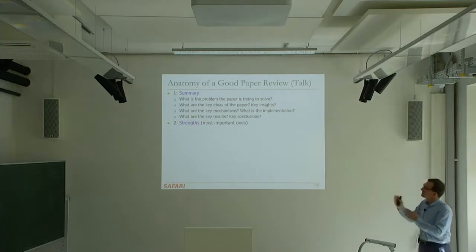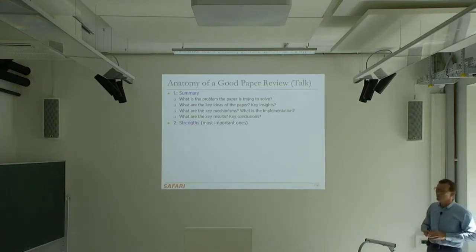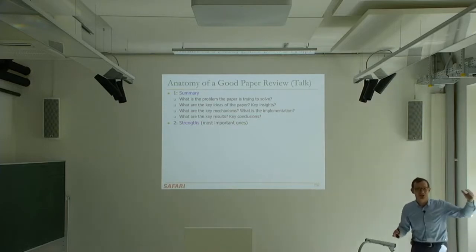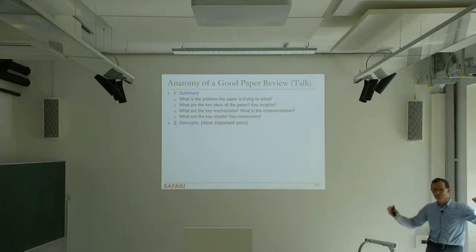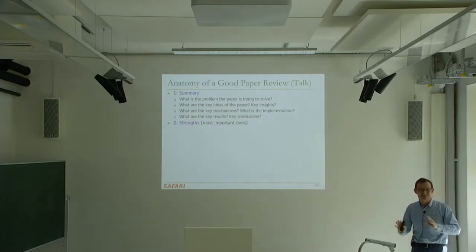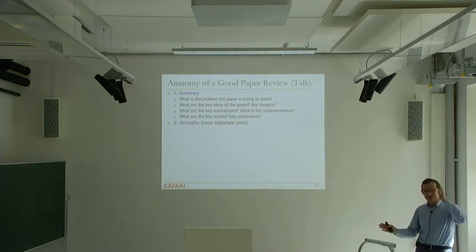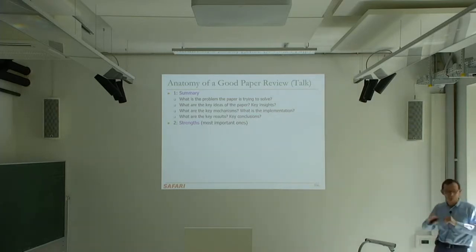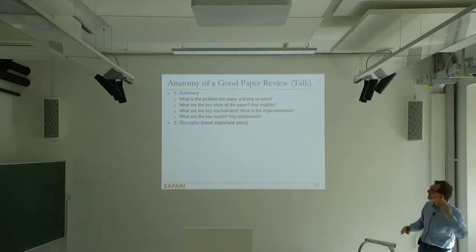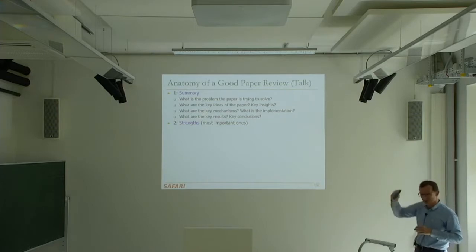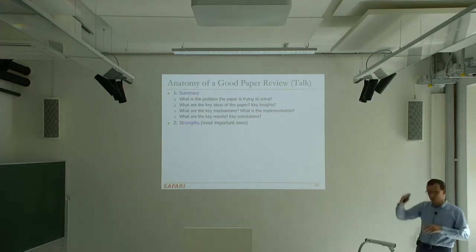For example, a strength of a paper could be that it opens a new research area that nobody has thought of — that's more important than showing a 5% or even 10x improvement. Even 10x is lower than opening a new research area. 'Well-written' is also somewhere, but it's hopefully not the biggest strength. So it's good to have these strengths nailed down and in order.